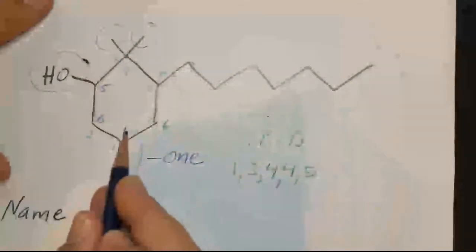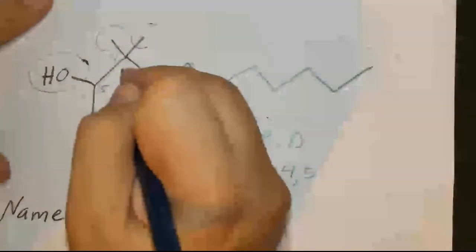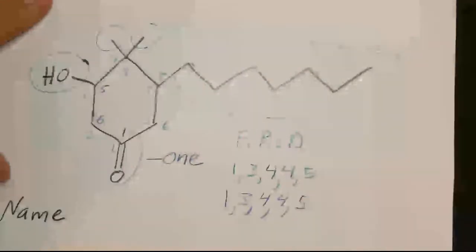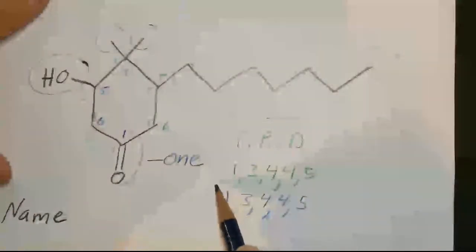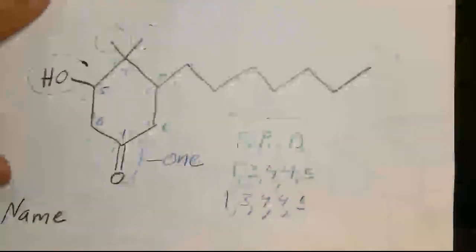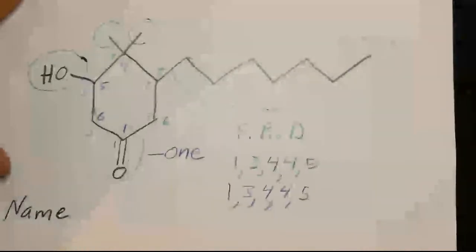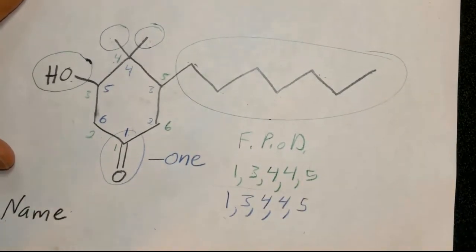Normally we would find one of these locant sets going lower at some point — that's why it's called the first point of difference. You go from lowest to highest until you find the first point where there's a difference, and pick the direction with the lower number. However, there is no difference in this case. So there's no way to minimize further — we've already minimized the functional group, and there's no first point of difference.